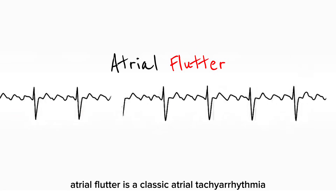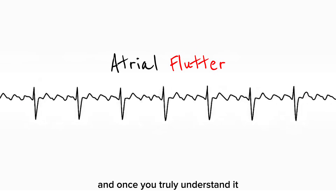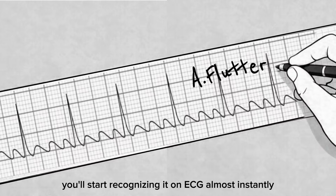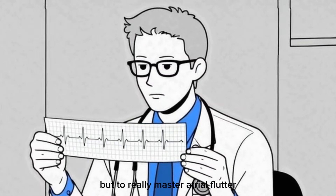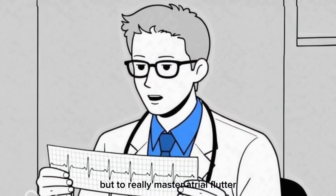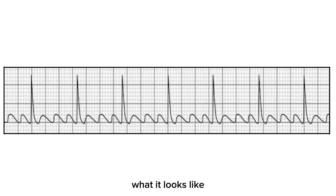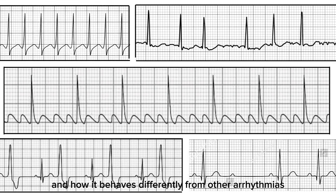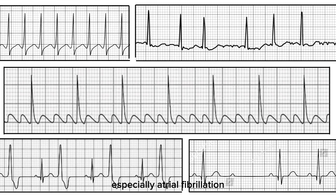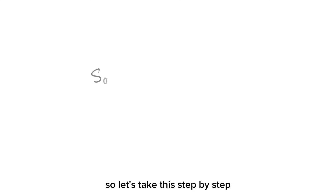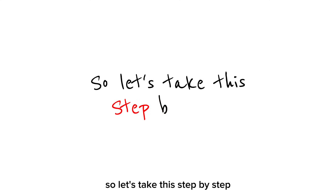Atrial flutter is a classic atrial tachyarrhythmia, and once you truly understand it, you'll start recognizing it on ECG almost instantly. But to really master atrial flutter, we need to understand why it happens, what it looks like, and how it behaves differently from other arrhythmias, especially atrial fibrillation. So let's take this step by step.